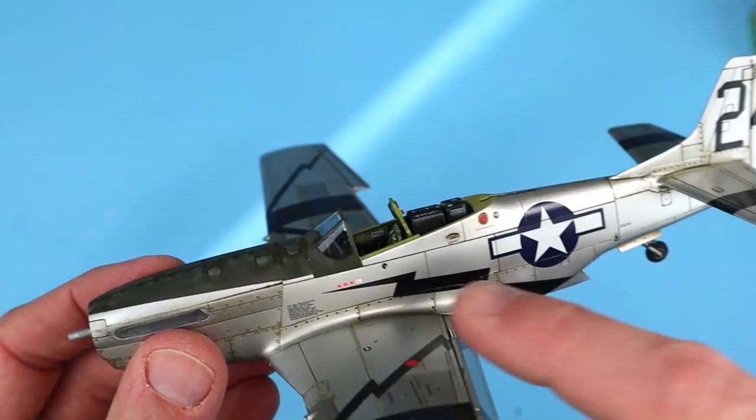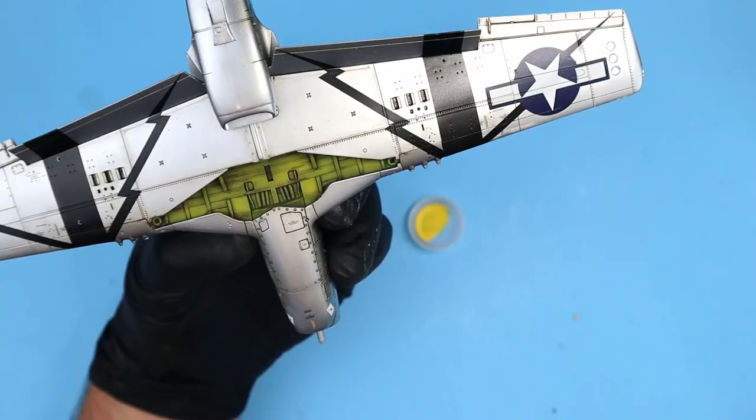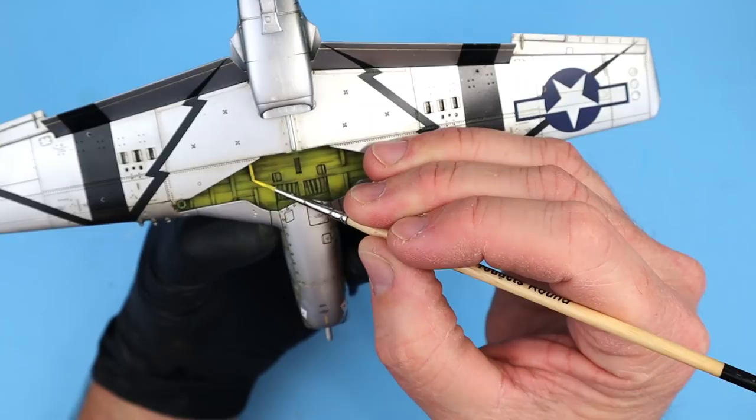The fit to the fuselage is also really nice and you can see that I'll need to fix the line for the anti-glare panel by masking off and spraying a little more aluminum to the lower area of the windscreen part.